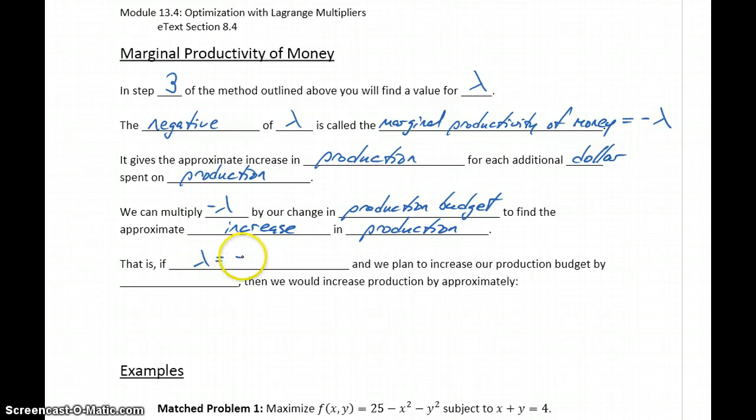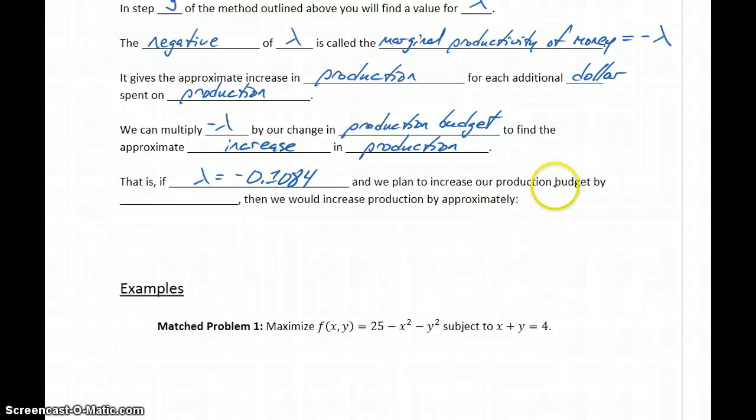If our value for lambda is negative 0.1084, and we plan to increase our production budget by $100,000, then increasing our budget by $100,000 should increase our production by the opposite of lambda times 100,000, which is going to be 0.1084 times 100,000, or 10,840 units.